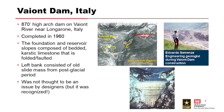Here's Vajont Dam, which everyone's probably heard of. It was an 870-foot arch dam on the Vajont River near Longarone, Italy, completed in 1960. The foundation and reservoir slopes were composed of bedded karstic limestone that is folded and faulted. You can see the ancient land mass that comprised the left abutment. The left bank consists of an old slide mass from the post-glacial period. It wasn't thought to be an issue by designers, but it was recognized. That's a pretty impressive structure.